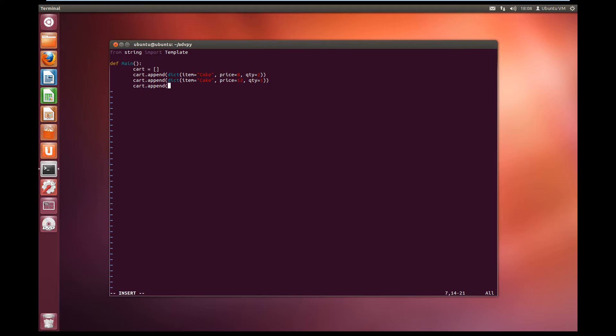And we'll add one last item. So cart.append and dictionary. Item, make it equal fish. So fish. And we'll make the total price for the fish $32 and the quantity equals 4. So now that we've got our cart, we just have to work on our output.